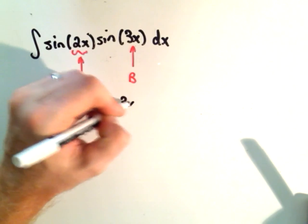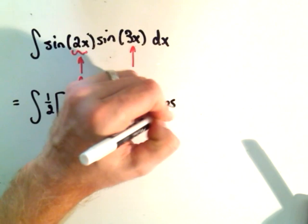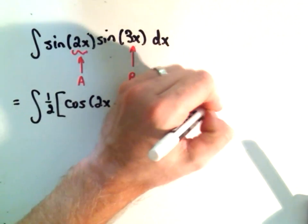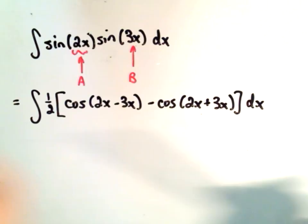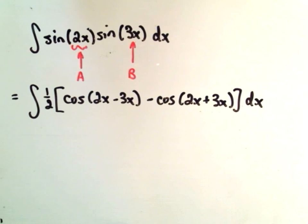minus cosine of the addition of the a and the b term. That's simply what we'll be left with in this case. Just pull the one-half out front.